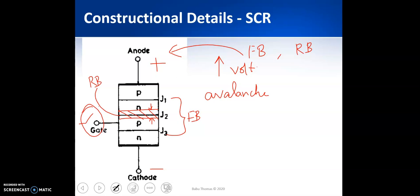We have not utilized the gate circuit in this case. However, if we apply a gate signal to the thyristor, we can make the device enter conduction mode at a much lower forward biased voltage — without needing to reach avalanche breakdown. The voltage at which the device turns on due to increasing anode-to-cathode voltage and avalanche breakdown is called the breakover voltage, VBO.